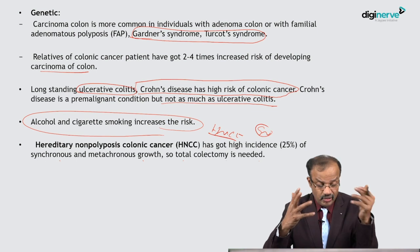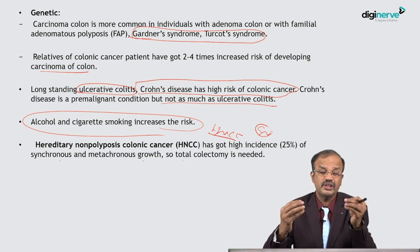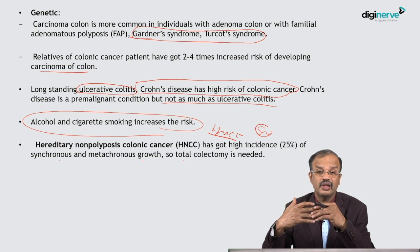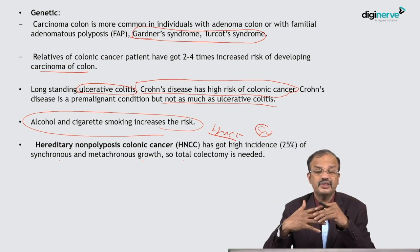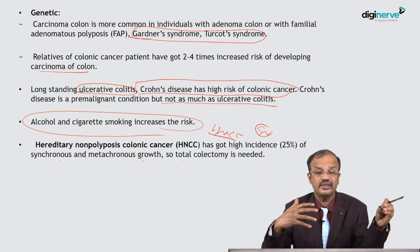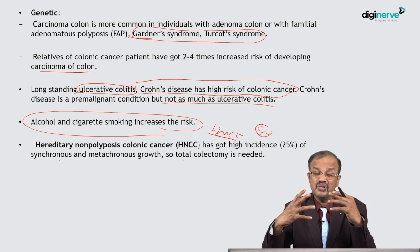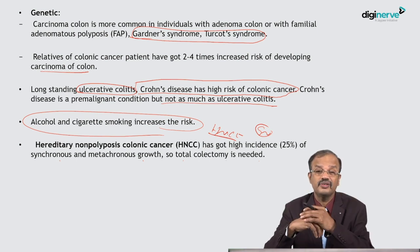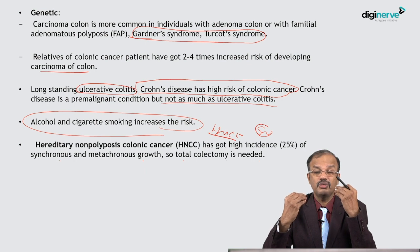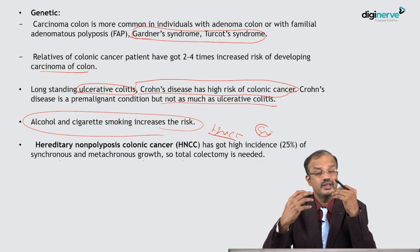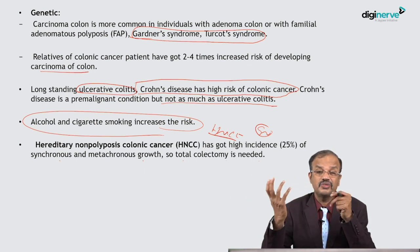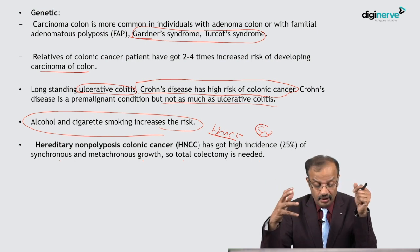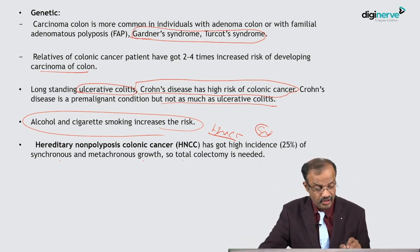Metachronous means there is a growth in the sigmoid colon, and after one, two, or three years the patient develops a growth in the right side colon or cecum — because the mucosa itself is vulnerable to malignant transformation. This is called metachronous growth. The same holds in the oral cavity — after treating buccal cancer, a patient may develop opposite buccal or tongue cancer after a few years. Metachronous growth is very common in HNPCC.